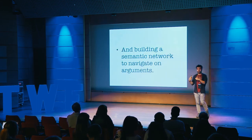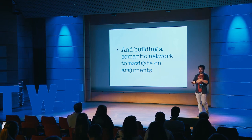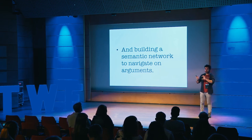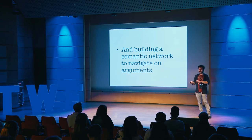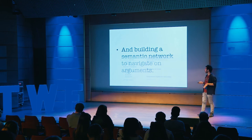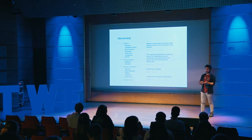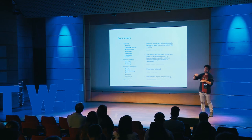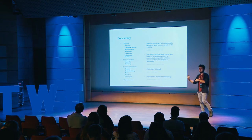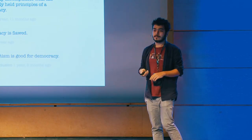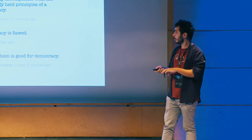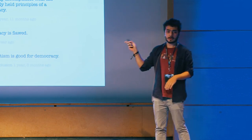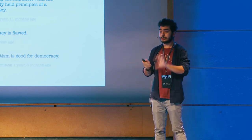Another goal is building a semantic network between the arguments. You have an argument like 'Democracy's flawed,' and after this argument you can see the counter arguments thanks to this semantic network. When you have an argument on democracy, it links to political systems, and you can check the arguments of other political systems. We use WordNet here — WordNet is a lexical data dictionary.